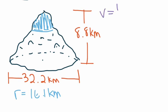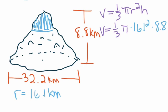We use V equals one-third pi R squared H, substituting 16.1 for R and 8.8 for H, giving us V equals one-third times pi times 16.1 squared times 8.8. Squaring 16.1 gives us 259.21, so V equals one-third times pi times 259.21 times 8.8.